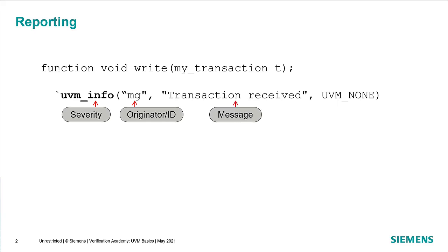The message itself is simply a string. It can either be a hard-coded string or it can be the result of a $sformat call or some other function that produces a string, so you can embed variable information in it as well. For info messages, there's also a verbosity which allows you to filter certain messages based on how important they are to you.